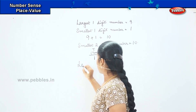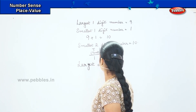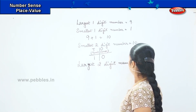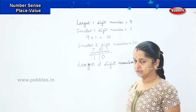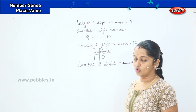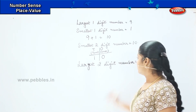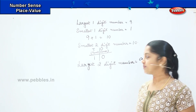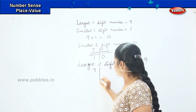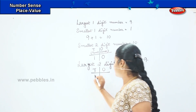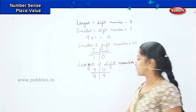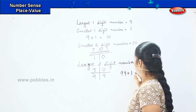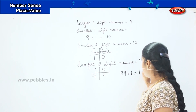Tell me, which is my largest two-digit number? Ninety-nine — bravo! You got the right answer. So how will you write tens and ones here? We will write nine tens and nine ones. And when I add one with ninety-nine, what is the answer? I get one hundred.